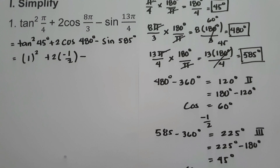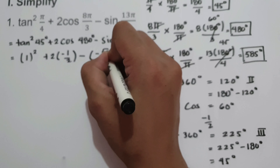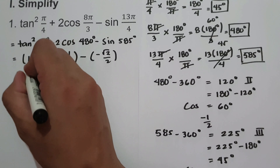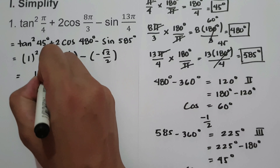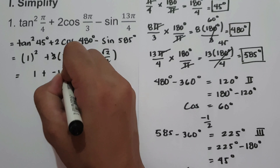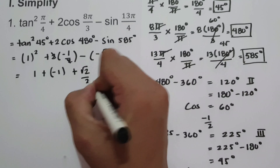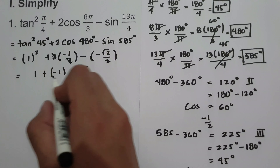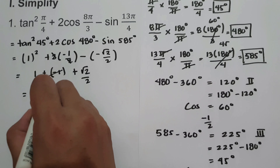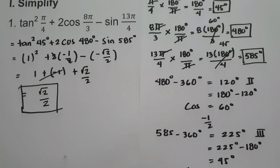Sine 45 degrees in quadrant 3 is negative square root of 2 over 2. Now let us simplify: 1 squared is 1, plus 2 times negative 1/2 — the 2 cancels — giving negative 1, minus negative square root of 2 over 2, which becomes positive square root of 2 over 2. So 1 minus 1 is 0, and therefore our final answer is square root of 2 over 2.